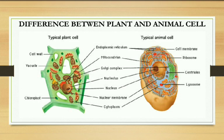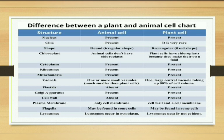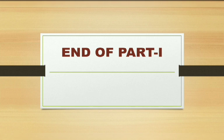Difference between plant and animal cell — this is most important. You have to draw a diagram. In plant cell: chloroplast, cell wall, one large central vacuole, nucleus usually pushed to the side, and rectangular shape are present. In animal cell: lysosome present, nucleus usually in the center, round shape, many small vacuoles. Common organelles in both: endoplasmic reticulum (rough and smooth), mitochondria, ribosome, vacuole, Golgi apparatus, nuclear membrane, cell membrane, cytoplasm, and nucleus. In examinations, you have to write 4 or 5 differences between plant and animal cell. This is the end of Part 1. Thank you.